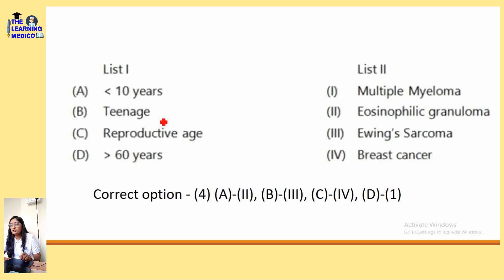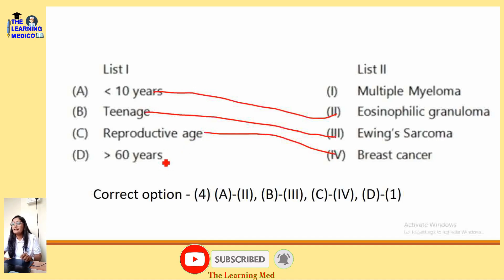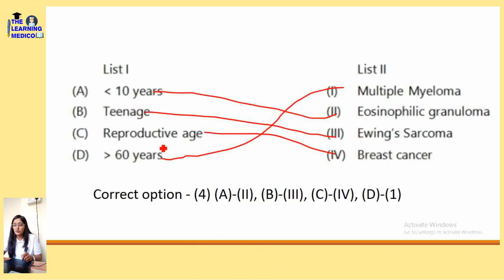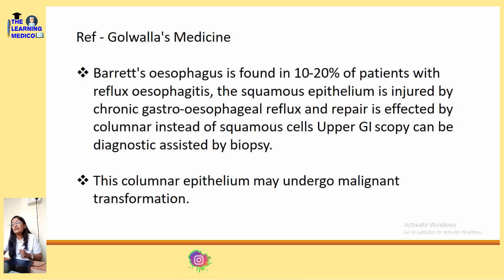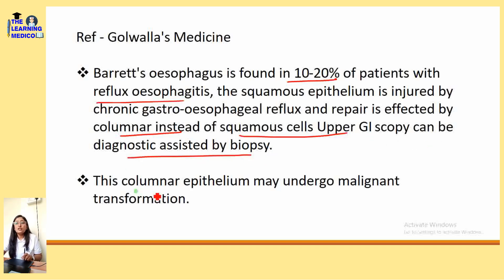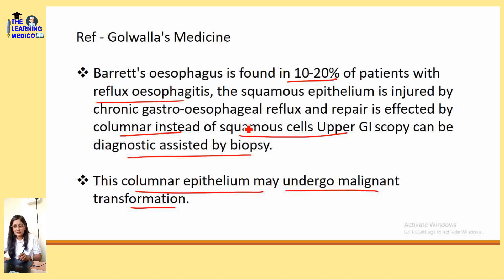Which carcinoma is seen by age group? In less than 10 years of age we can see eosinophilic granuloma. In teenagers, Ewing's sarcoma. In the reproductive age group, mostly breast cancer. And more than 60 years of age, multiple myeloma. Barrett's esophagus is characterized by columnar metaplasia. It is found in 10–20% of patients with reflux esophagitis. The squamous epithelium is injured by chronic gastroesophageal reflux and repair is effected by columnar instead of squamous cells. The columnar epithelium can undergo malignant transformation. Correct answer: columnar metaplasia.